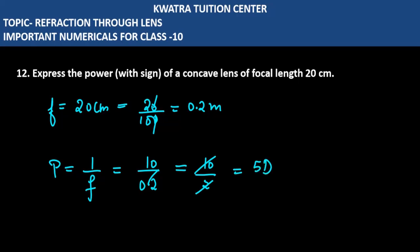And you have to take care that you need to represent the power with a sign. So how do you represent the sign? For a concave lens, the focal length is negative. So yes, it is minus 5D. Now, moving to question number 13.